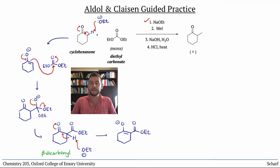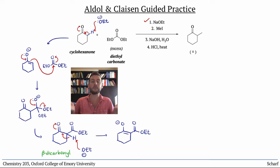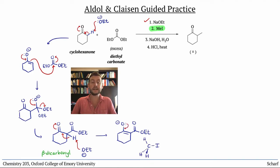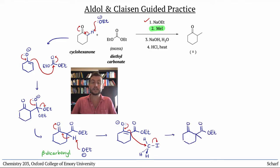Normally, we finish a Claisen condensation with an H-plus workup to protonate exactly where we just deprotonated. But there's no reason we can't replace that step with another reagent that will react at that site. An alkyl halide that's a good SN2 electrophile, like methyl iodide, will do just fine. This is enolate alkylation, and step two is complete.